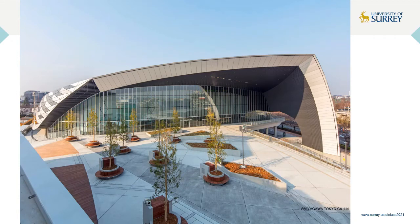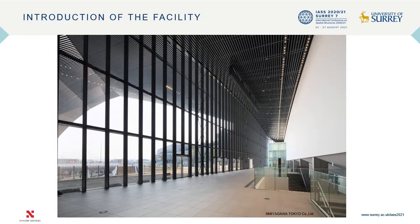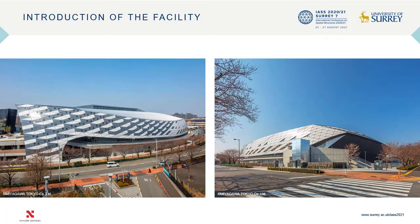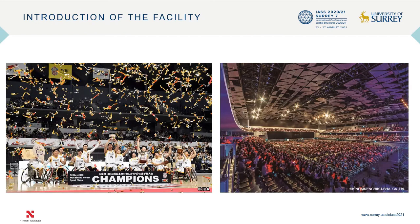The main arena welcomes people with a 40-meter cantilever eaves. The foyer of the main arena welcomes many spectators. The exterior of the main arena is a double skin system with environmental elements such as green panels and perforated aluminum panels. It was designed not only to accommodate local sports activities and international athletic competitions, but also large-scale events including music events.